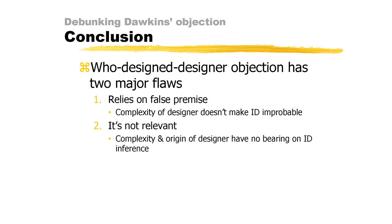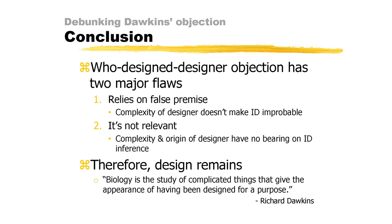Significantly then, because Dawkins' 'who designed the designer' objection fails, it does not preclude our discernment of the effects of such a God. Dawkins' 'who designed the designer' objection has two major flaws: it is based on a false premise and it is basically irrelevant. In other words, the objection that purports to show us that God is a delusion is, to put it mildly, a philosophical blunder. Significantly, nature's apparent design remains and continues to suggest an intelligent designer, as even Dawkins should admit.